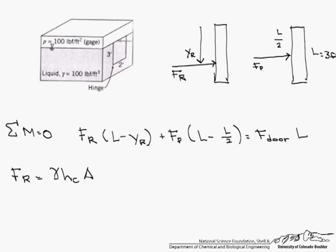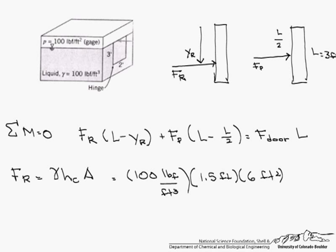Our gamma is given as 100 pound-force per feet cubed. Our h sub c, which is just the centroid — and this is just a rectangle — is halfway down, or 1.5 feet, and our area is 6 feet squared. So our F sub r is 900 pound-force.